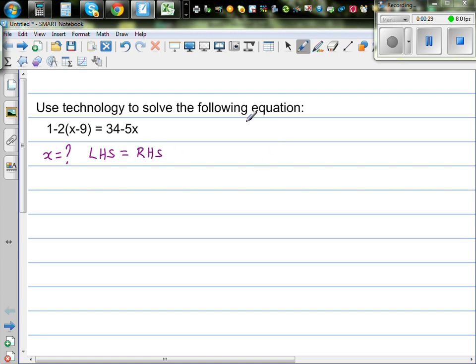So let us start. Suppose let's say x is equal to 0. So what's your left hand side? Your left hand side would be 1 minus 2 times 0 minus 9, which is nothing but 1 minus 2 times negative 9. You should know the maths before you use the technology. So this is 1 plus 18 is 19. So when x is 0, your left hand side is 19.